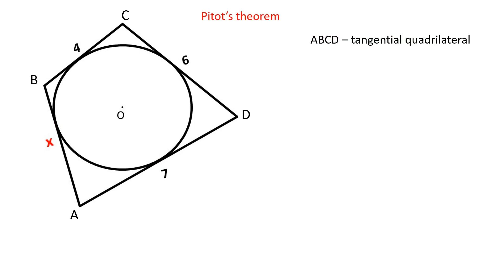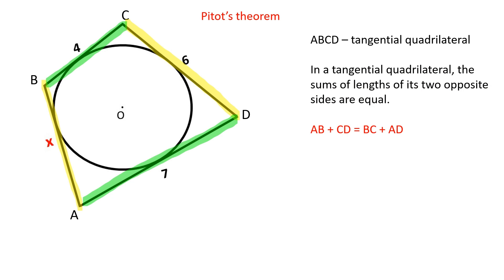According to Pitot's theorem, in a tangential quadrilateral, the sums of lengths of its two opposite sides are equal. The sum of AB and CD is equal to the sum of BC and AD.